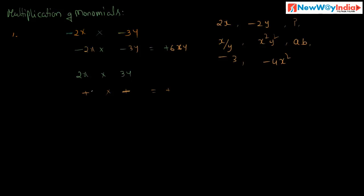Consider another example: plus 2x into plus 3y. First, multiply the signs — plus into plus gives plus. Then multiply the numerical coefficients: 2 into 3 equals 6. Then multiply the variables: x into y equals xy. So the result is 6xy. The product of two factors with like signs — either both negative or both positive — is positive. This is the first step.